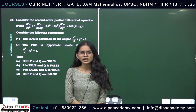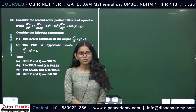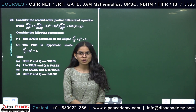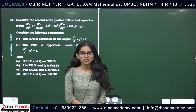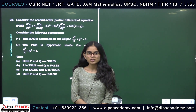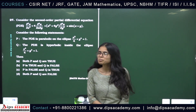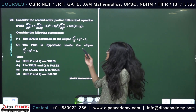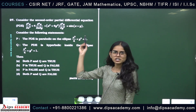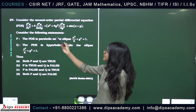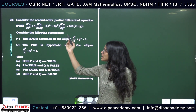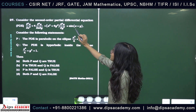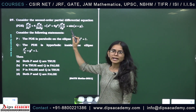Hello everyone. Today we will be doing a question from GATE 2021, which is on the subject of partial differential equations. We are given a second-order partial differential equation: del²u/dx² + 4·del²u/dxdy + (x² + 4y²)·del²u/dy²